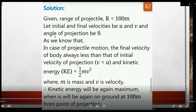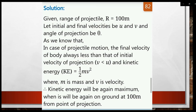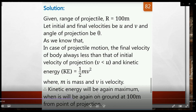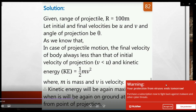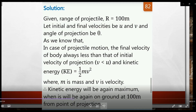For the projectile, the angle theta gives a velocity of projection v less than u. The final velocity is less than the initial velocity u. Kinetic energy is ½mv², and it is maximum at the lowest point where speed is maximum.